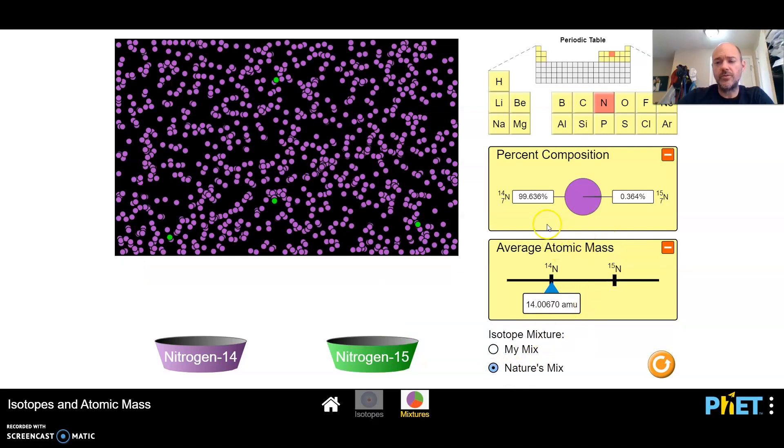really almost all nitrogen is nitrogen 14, 99.6 percent. There's a small amount that's nitrogen 15, so you can see that. So that means the average atomic mass ends up being 14.